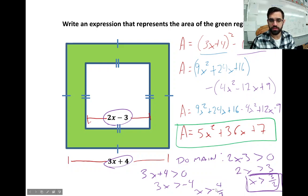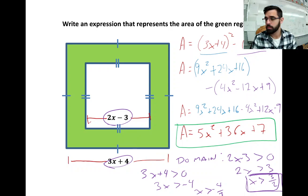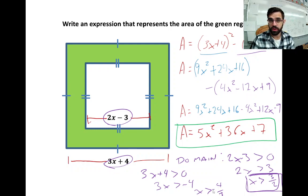To say that another way: x = 0 would work for the big square, but it wouldn't work for the little square. We want the x-values that work for both squares. I like to talk about t-parties — the domain restriction includes all x-values invited to both t-parties. For 3x + 4, only numbers greater than -4/3 are invited. But for 2x - 3, only numbers bigger than 3/2 are invited.